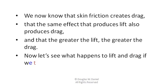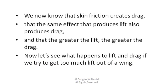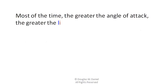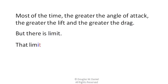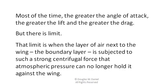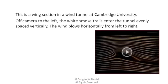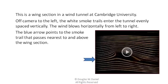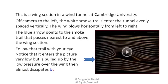Now let's see what happens to lift and drag if we try to get too much lift out of a wing. Most of the time, the greater the angle of attack, the greater the lift and the greater the drag, but there is a limit. That limit is when the layer of air next to the boundary layer is subjected to such a strong centrifugal force that atmospheric pressure can no longer hold it against the wing. This is a wing section in a tunnel at Cambridge University in England. The white smoke trails enter the tunnel evenly spaced vertically and the wind blows horizontally from left to right. The blue arrow points to the smoke trail that passes nearest to and above the wing section. Notice that it enters the picture very low but is pulled up by the low pressure over the wing, and then almost dissipates by the trailing edge.